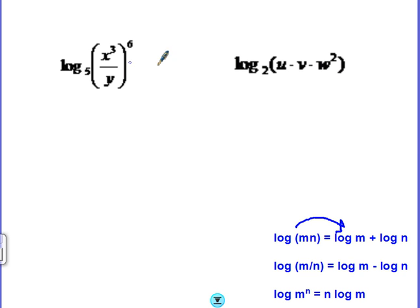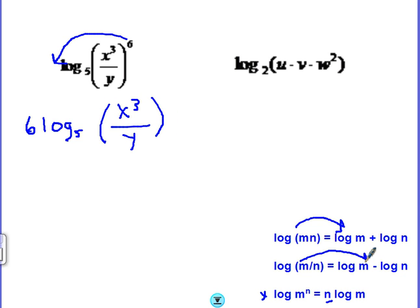We have an exponent here. I would take care of those exponents first. The exponent can be put out in front of the log. Let's do that first. We have 6 log base 5 of x to the 3rd over y. Now we have a division. Divisions become subtractions. You're subtracting the numerator minus the denominator. So we're going to do 6 log base 5 of x to the 3rd minus, now this 6 is going to be carried along with both of the logs, log base 5 of y.